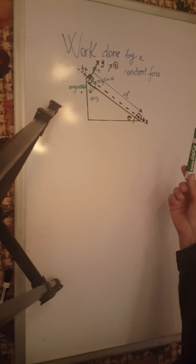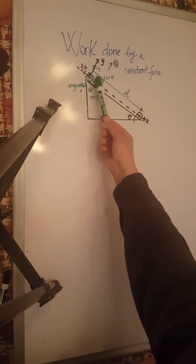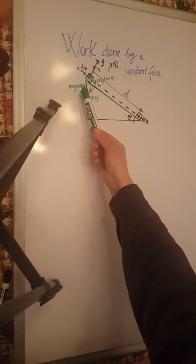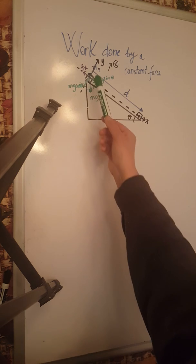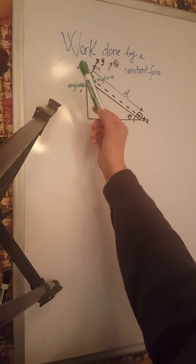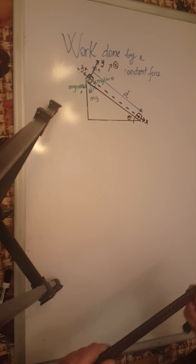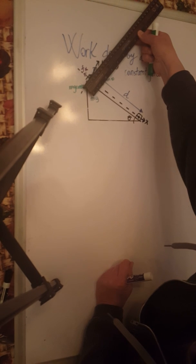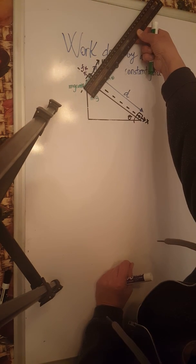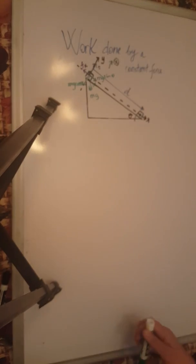The forces acting upon the object as it moves down the ramp are: the force of gravity mg, which resolved gives us mg sine theta and mg cosine theta; the normal force n in blue; and the kinetic force of friction in the opposite direction of motion. The two forces along the y-axis must balance — mg cosine theta is 3 and n is also 3, so they are balanced.